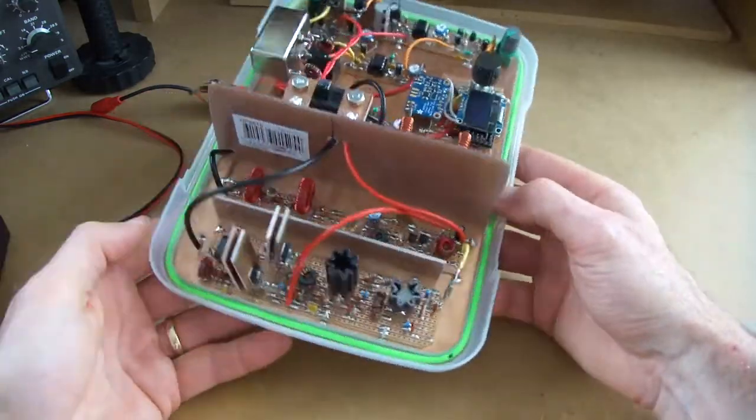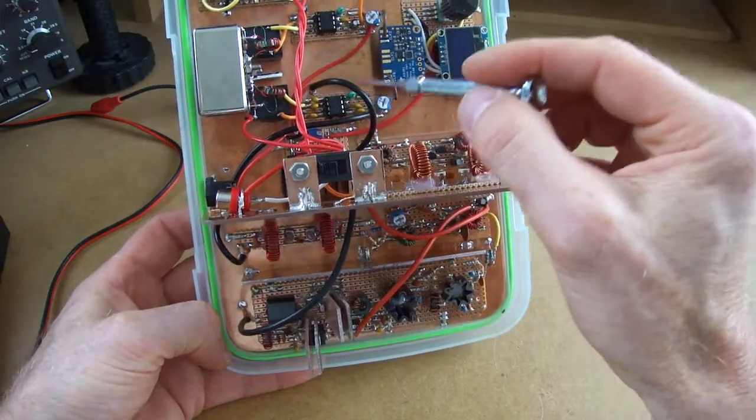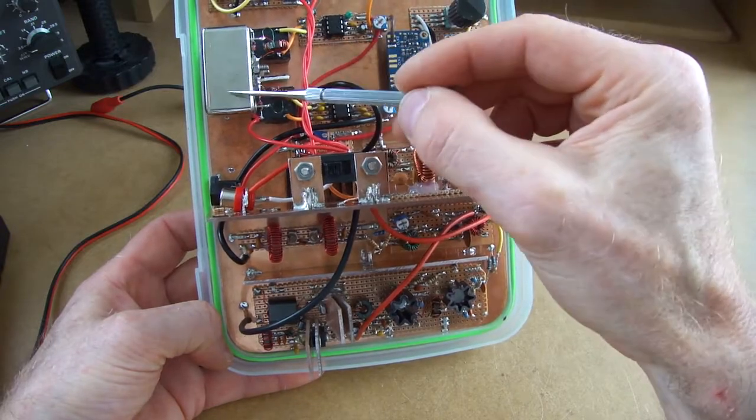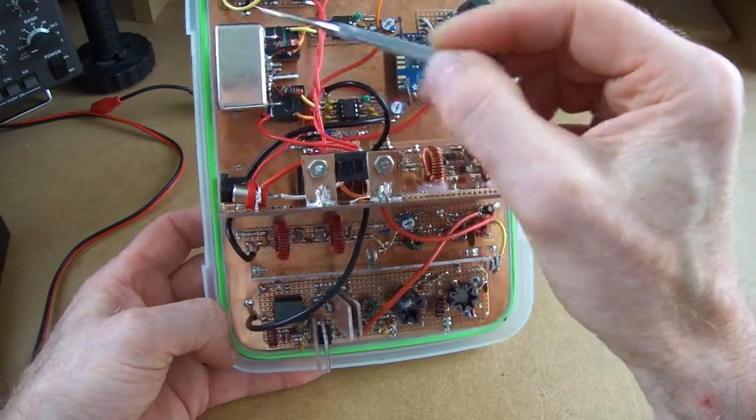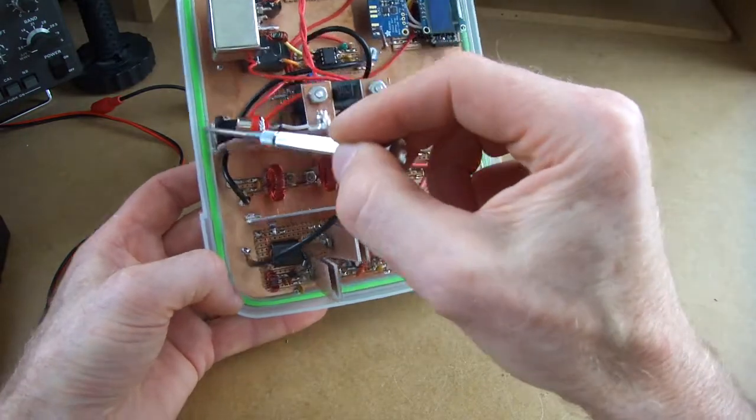And just on the transmit side, coming through. You can sort of see there, on the transmit, microphone amp. The first mixer, through the AF strip, or through the crystal filter. The second mixer, comes out this black coax here.